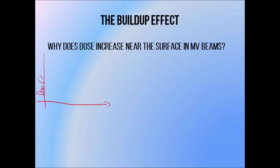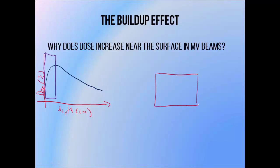When looking at megavoltage beam PDDs, we see an obvious increase in dose just beneath the surface, known as the buildup region. The first explanation involves recognizing that a photon beam turns every irradiated point within a medium into a radiation source with its own dose distribution. The dose received by a point is mostly due to the dose produced by surrounding points — from below, beside, but mostly from above. Close to the surface, there's no medium above these points in the buildup region, so these points are not receiving dose from irradiated points above, resulting in a lower dose.